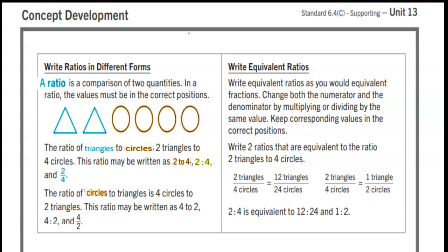The ratio of circles to triangles is four circles to two triangles. The ratio may be written as 4 to 2, 4 colon 2, and 4 over 2.